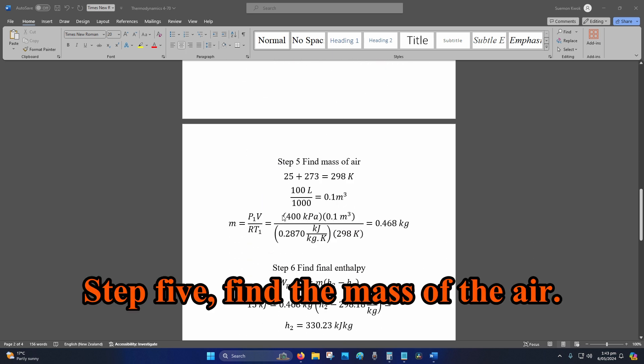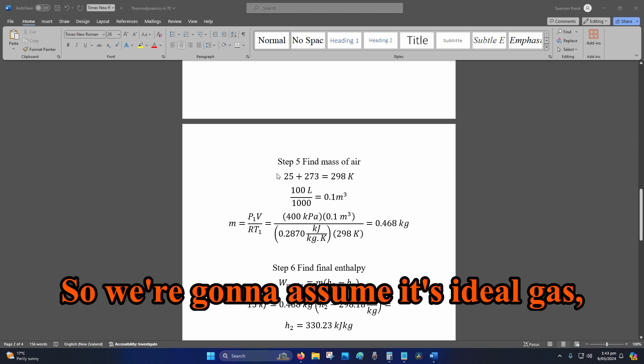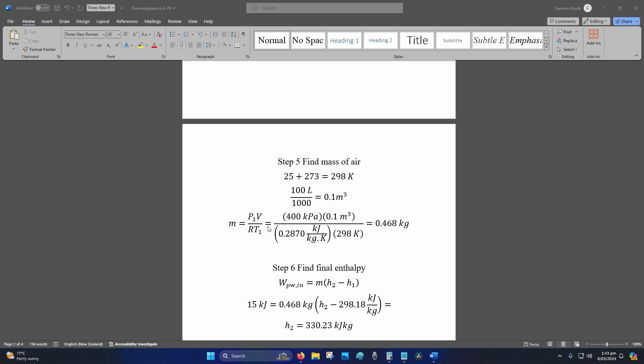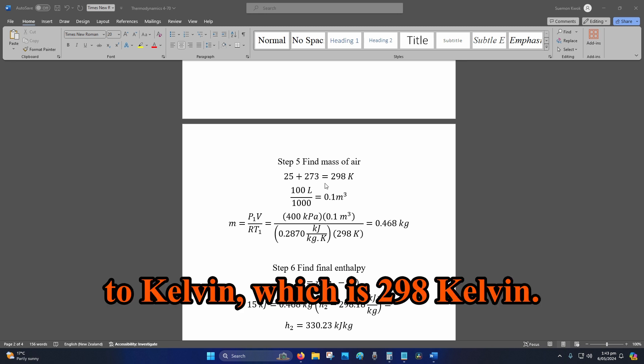Step five: find the mass of the air. So we're going to assume it's ideal gas, which is m equals pV divided by RT. Once again, we need to convert our degrees Celsius to Kelvin, which is 298 Kelvin.